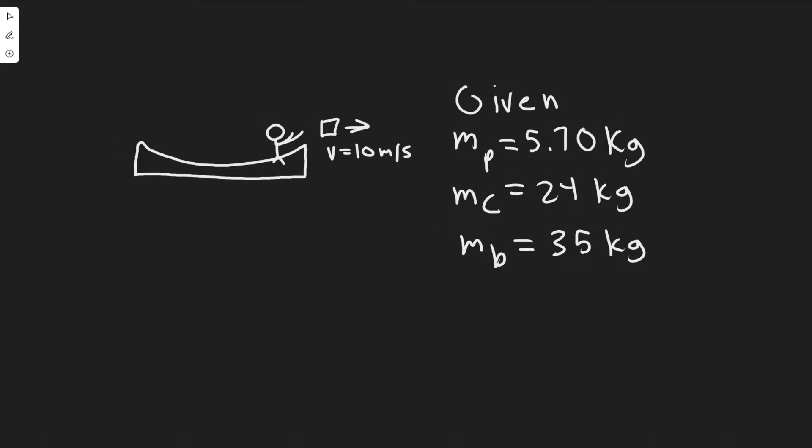So basically what we have here is this boy, he's in this boat and we know he's going to throw a package this way with a velocity of 10 meters per second and we're going to be finding the speed that the boat and the boy travel. You can think of them as one unit and they're basically going to be traveling as a result of throwing this.